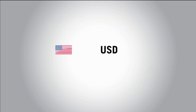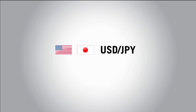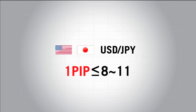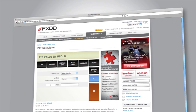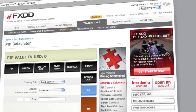Pairs with the U.S. dollar as the base currency — for example, the dollar swiss or the dollar yen — are worth roughly between $8 and $11 a pip. There is not an exact measurement because the value is always changing due to the rate. For a pip calculator, please go to www.fxdd.com.